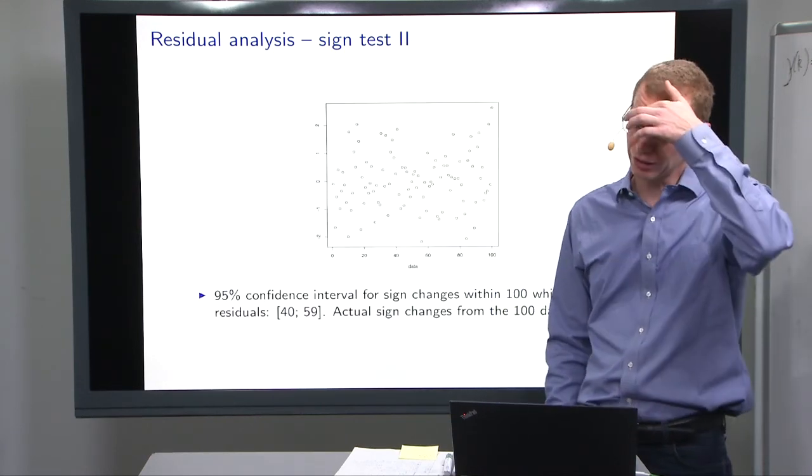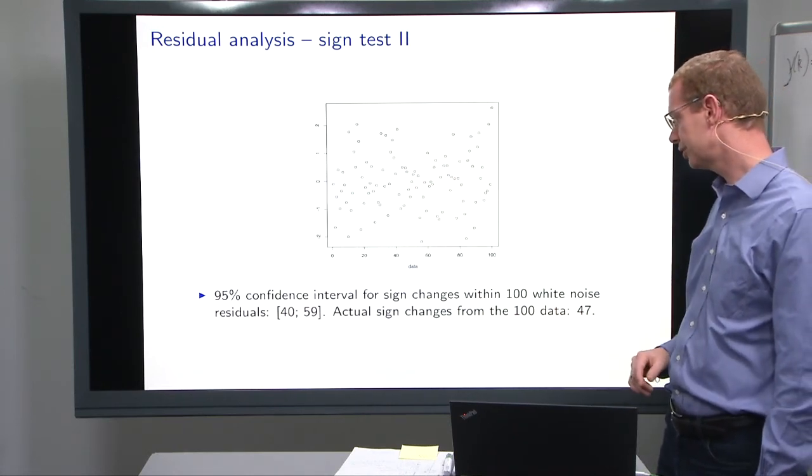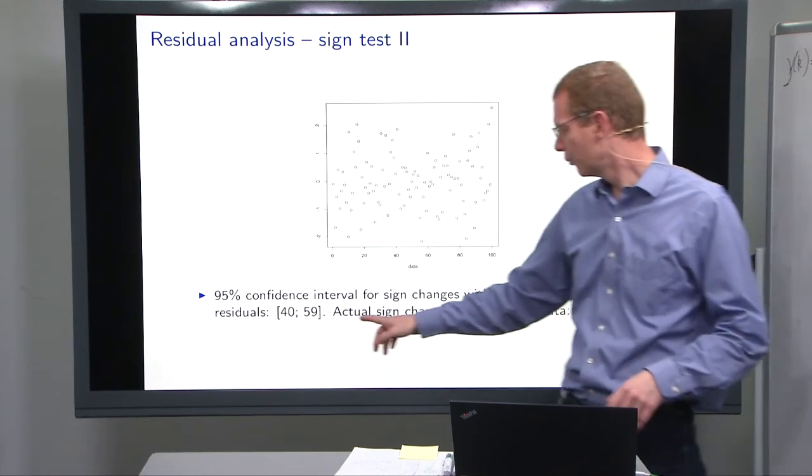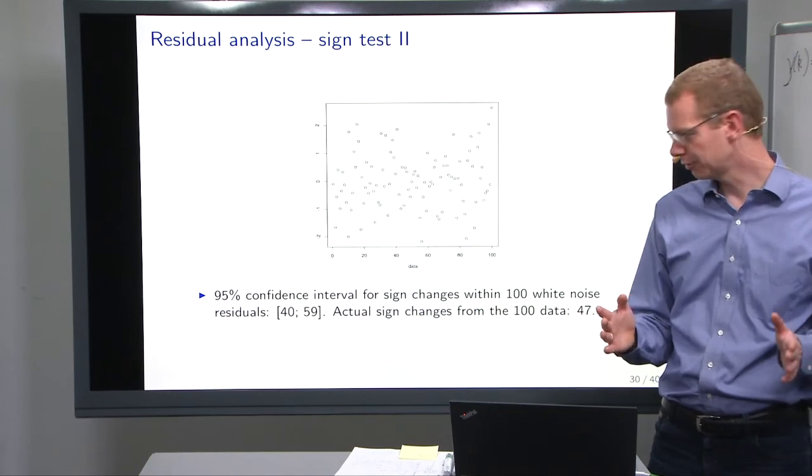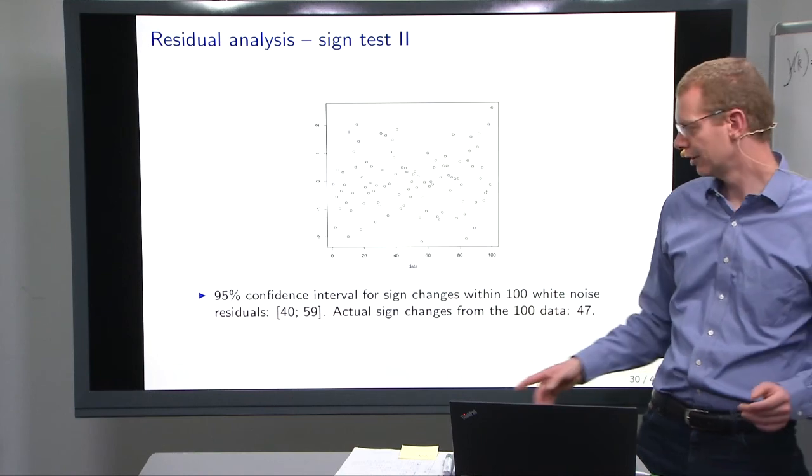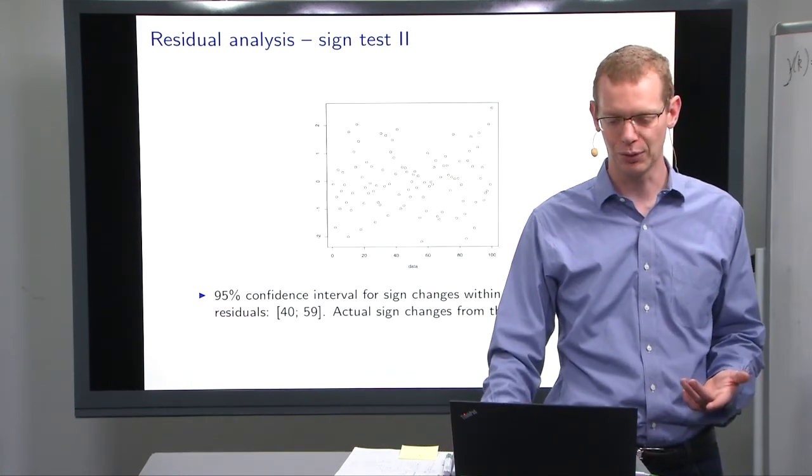If we do the sign test, in this case we have 100 observations from a white noise process. Then if we do what we just said before, we should expect a number between 40 and 59 sign changes in practice, and in a particular sample we got 47. And 47 is nicely within this interval, so we cannot reject that this is white noise.